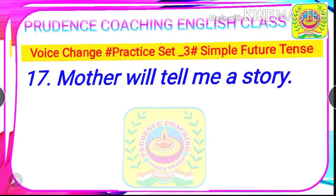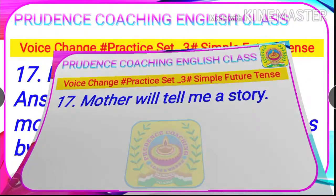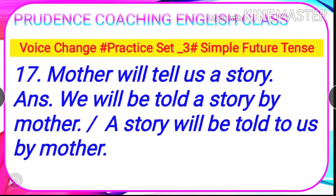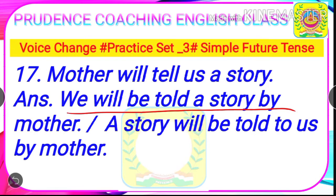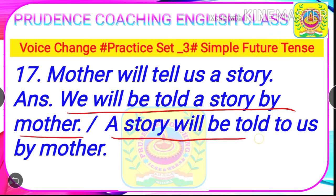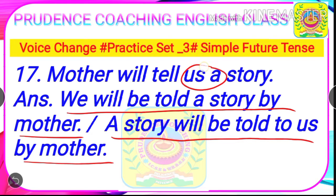Time is finished. The answer is: I will be told a story by mother. A second answer is also possible: A story will be told to me by mother. So when there is an indirect object like this, you will be able to form two answers. You can write any of the answers — both are correct.